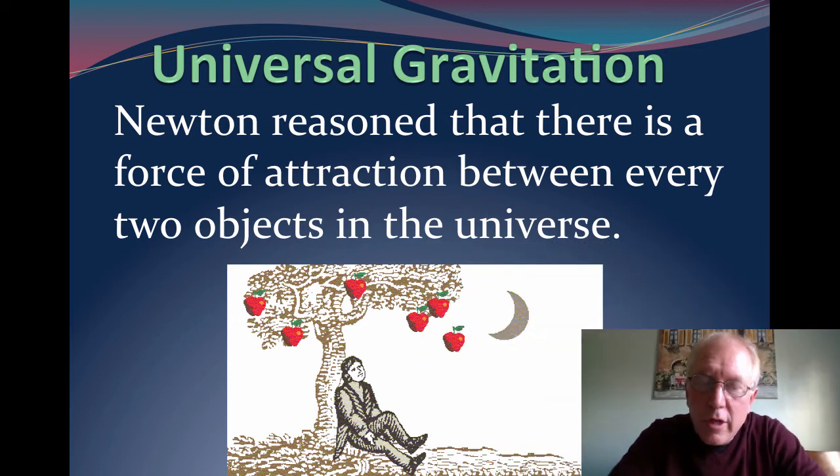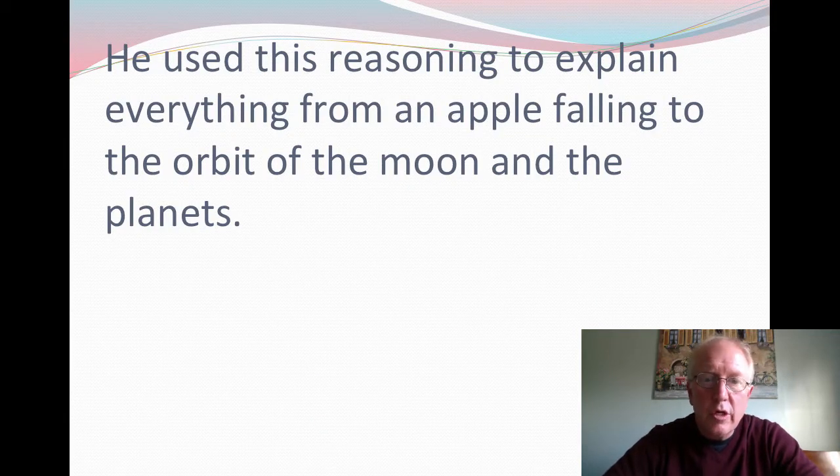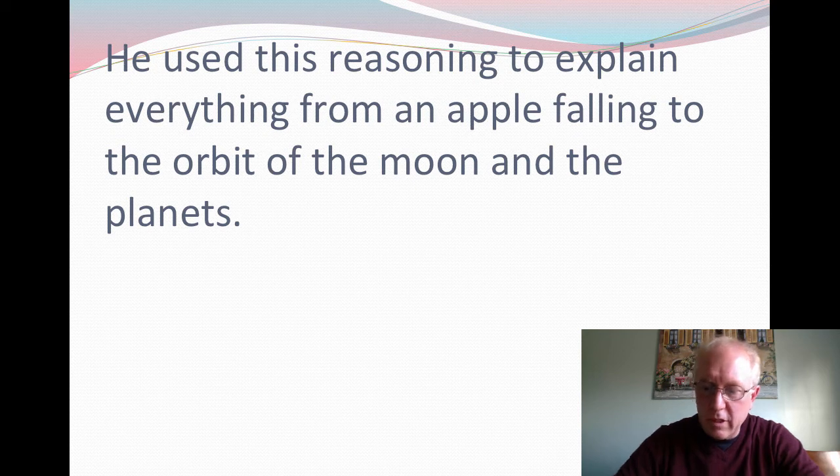All right, here we are with another one of our video presentations, and this time our topic is universal gravitation. So the idea here starts with Newton seeing an apple fall out of a tree, or so the story goes. The story says that Newton, seeing the apple falling out of a tree, realized that something made it fall, and that same something was what kept the moon going around the earth and the earth going around the sun. And this is universal gravitation, the idea that there's an attraction between every two objects in the universe.